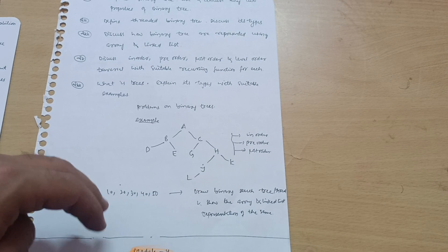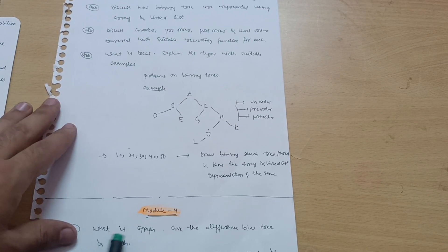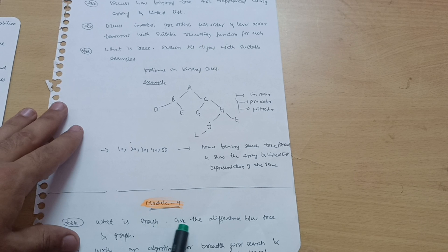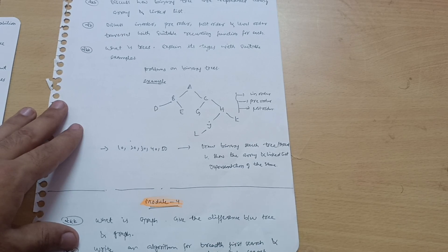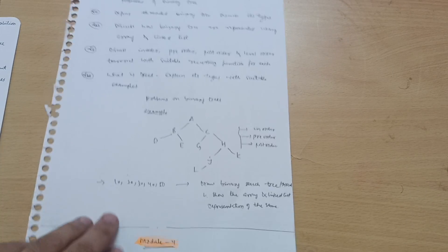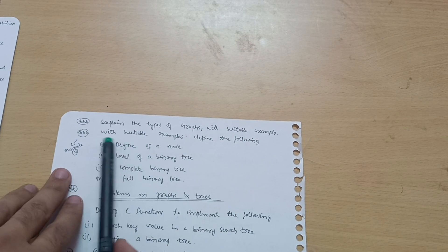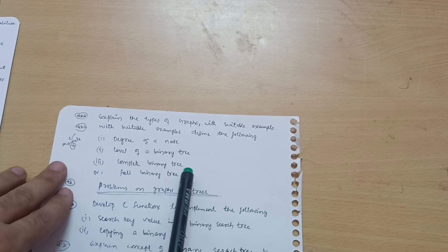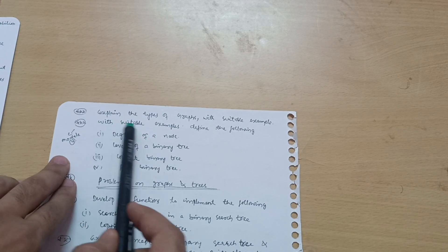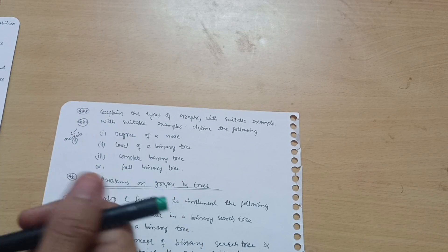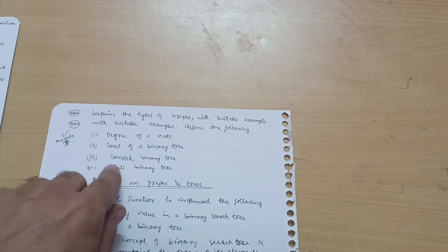Modules 4 and 5 are comparatively more difficult than the first three passing modules. From Module 4, questions will be like: what is a graph, give the difference between a tree and a graph, write an algorithm for breadth-first search (BFS) and depth-first search (DFS) - this is a most frequently asked question in the VTU examination. Also explain the types of graphs with suitable examples. From Module 3 also: define the following - degree of a node, level of a binary tree, complete binary tree, and full binary tree.